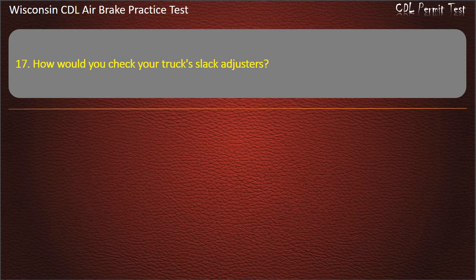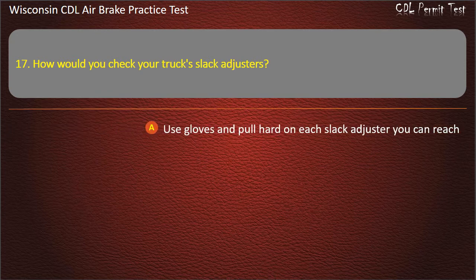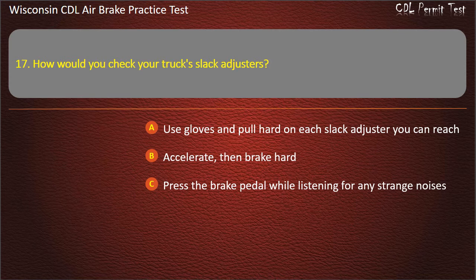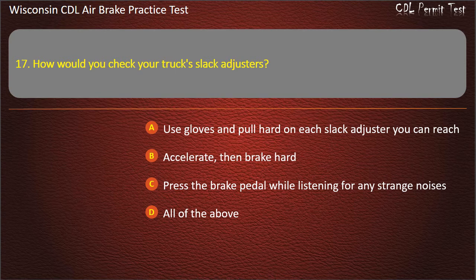Question 17. How would you check your truck's slack adjusters? Use gloves and pull hard on each slack adjuster you can reach. Accelerate, then brake hard. Press the brake pedal while listening for any strange noises. All of the above. Answer: Use gloves and pull hard on each slack adjuster you can reach.